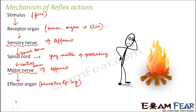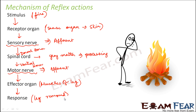The effector organ in this case is the muscles of the leg. It receives the response from the spinal cord in the form of an electric impulse, and then the effector organ gives out the response — the leg is removed. You know for yourself that this entire process takes place instantly.